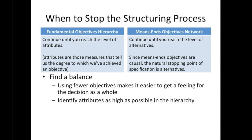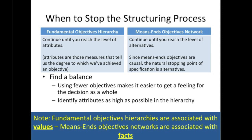In general, the rule of parsimony applies here — it's better to use as few objectives as possible to completely specify your value structure. Accordingly, you'll want to identify attributes or measures as high as possible in your fundamental objectives hierarchy. An important note: we use fundamental objectives hierarchies to measure the degree to which we've achieved our objectives — that is, what's important to us, which is the same as the things that we value.